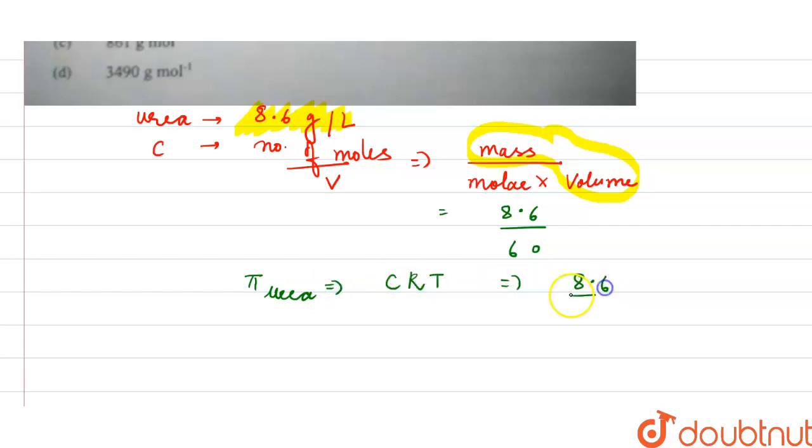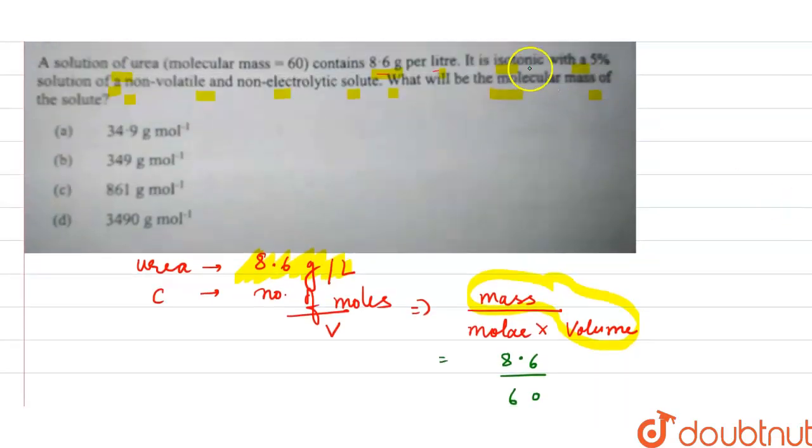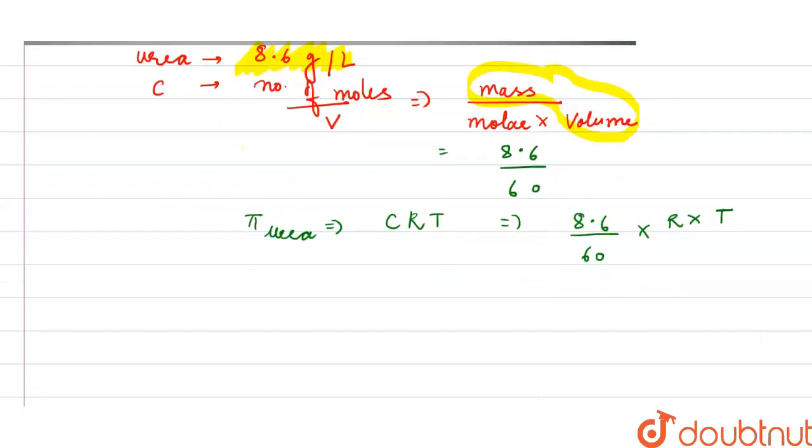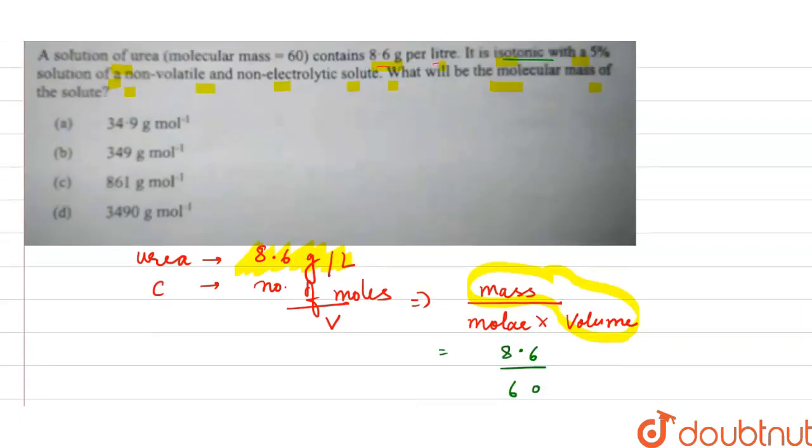In the question it is given that it is isotonic. What are the isotonic solutions? The isotonic solutions are those which have the same osmotic pressure. So we can write that the osmotic pressure of urea is equal to the osmotic pressure of the solute.